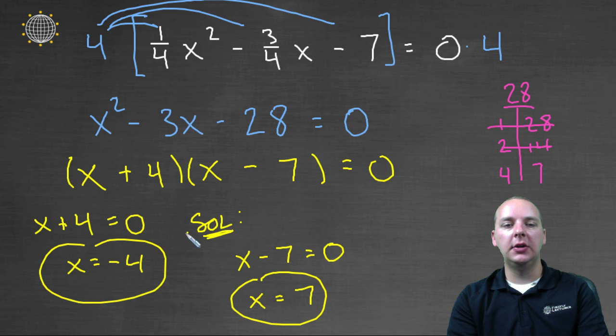So we found our two solutions here, x equals negative four, and positive seven.